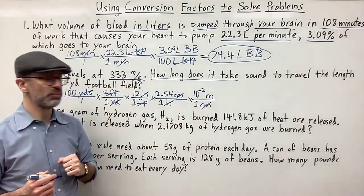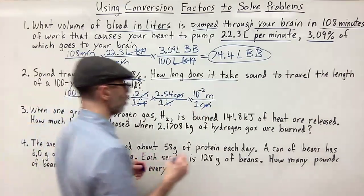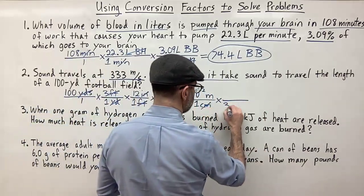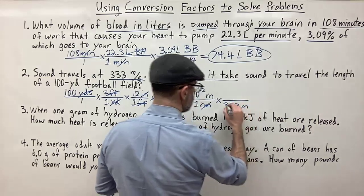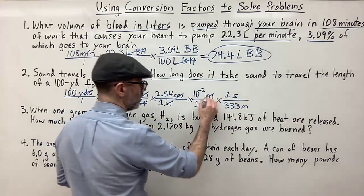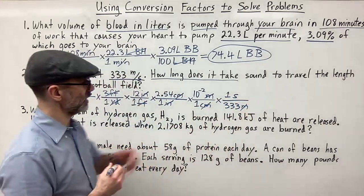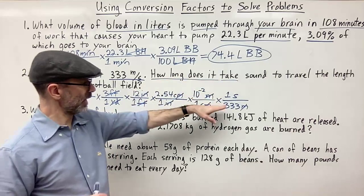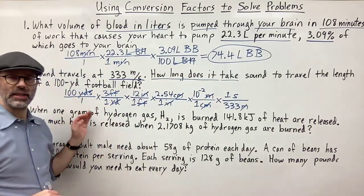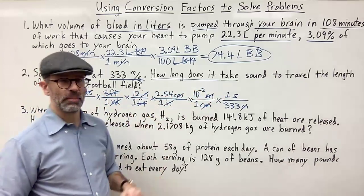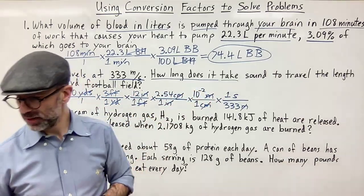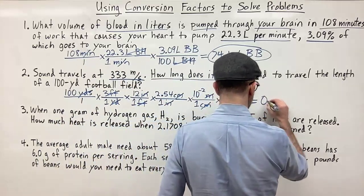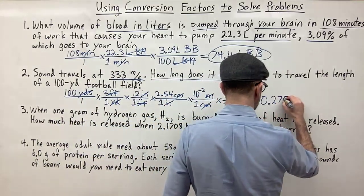Now I can use 333 meters per second as a conversion factor. So 333 meters goes on the bottom and one second on top — meters cancel out and I now have seconds on top. That is what I want — time in seconds. So now I multiply across the top and divide by everything on the bottom, and I get 0.275 seconds. That is the length of time.